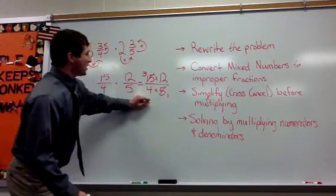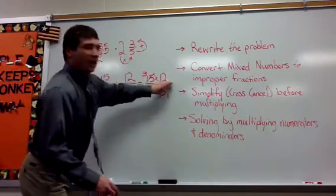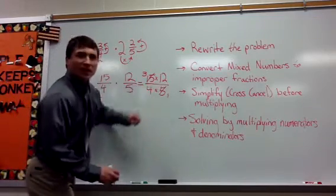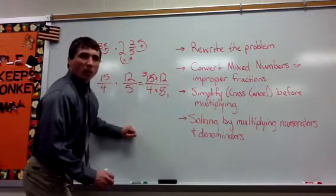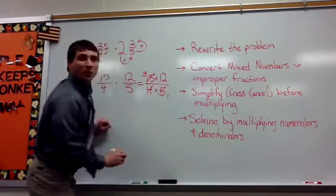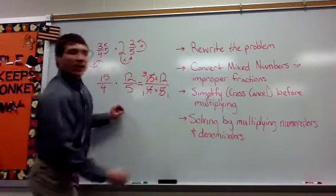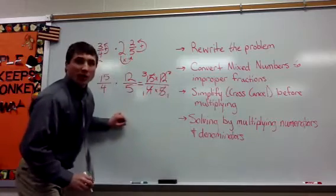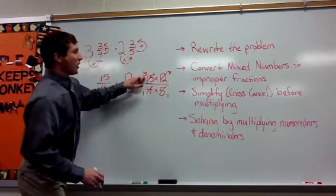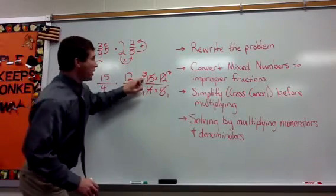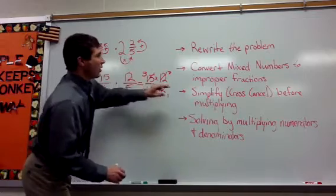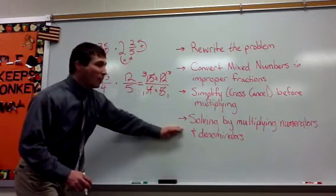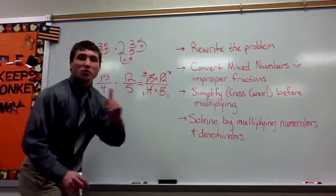Now I'm going to do the same thing because four and twelve also have a common factor — the common factor here is four. So I'm going to factor a four out of the denominator and a four out of the numerator. Now I'm left with the simplified problem, and all I have to do is multiply — moving on to the last step, which is to solve by multiplying numerators.